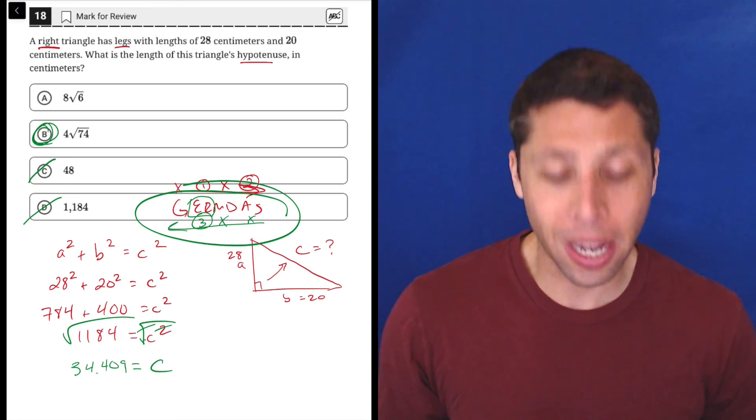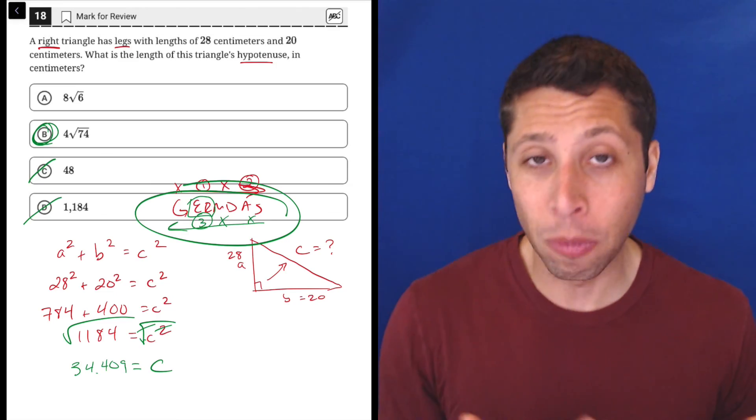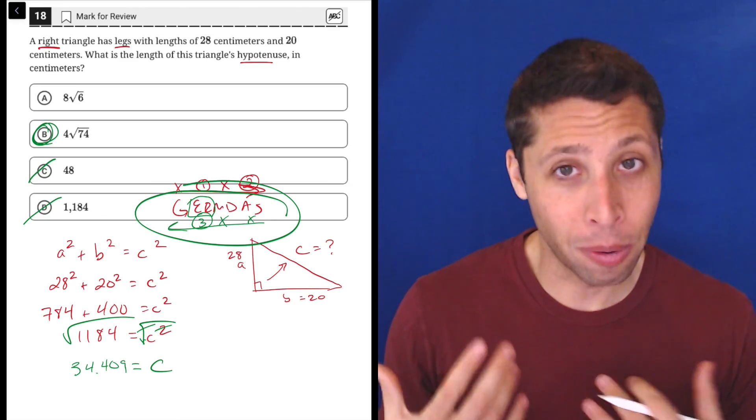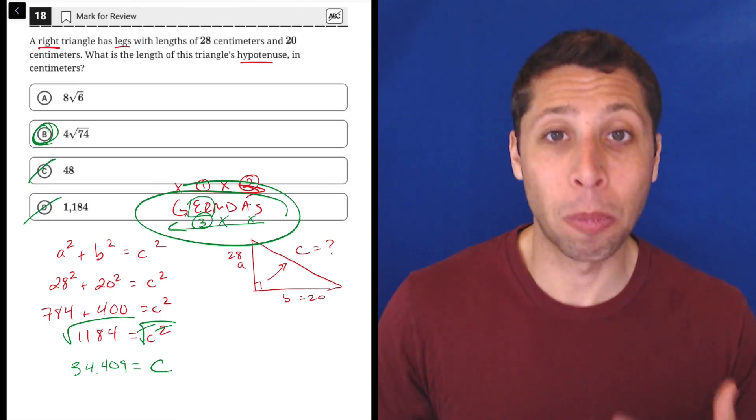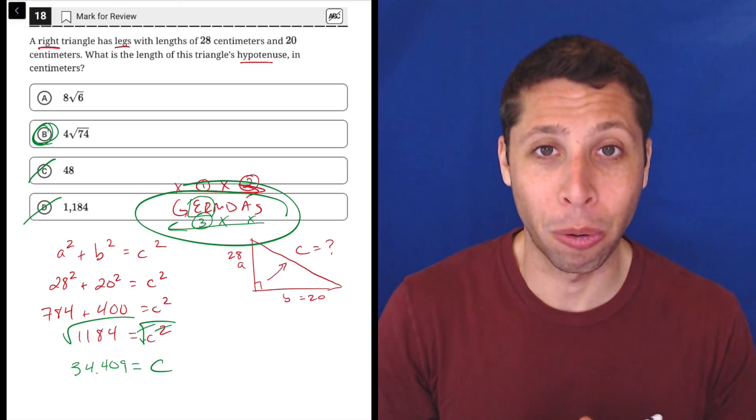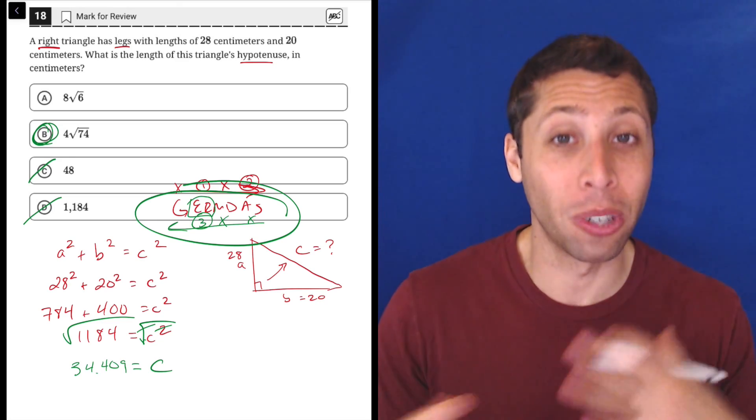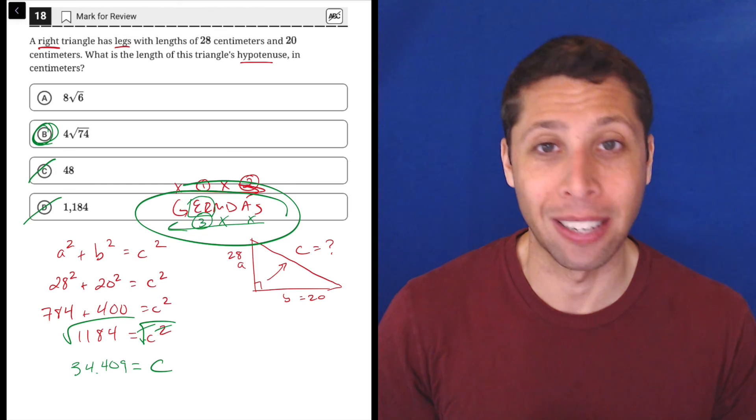Either way, we're going to use GERMDAS. But the direction that we're moving through GERMDAS changes. Basically, algebra is arithmetic in reverse. So we've got to go backwards through it. And that might matter more when we have more steps for that algebra, more complicated stuff to work with.